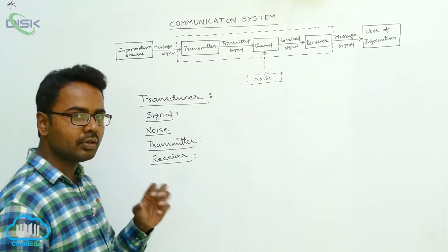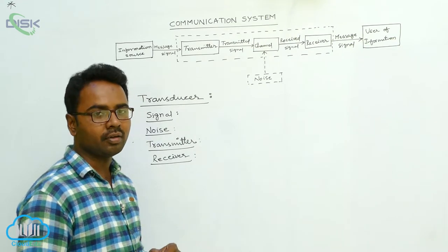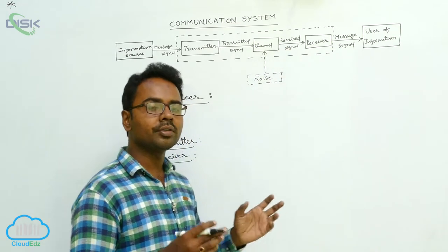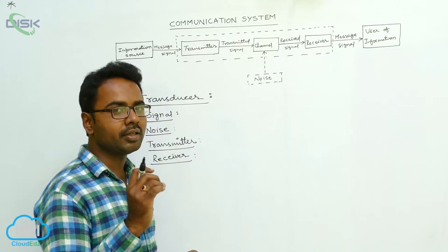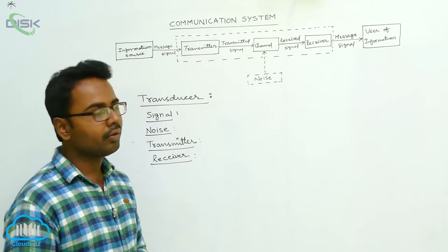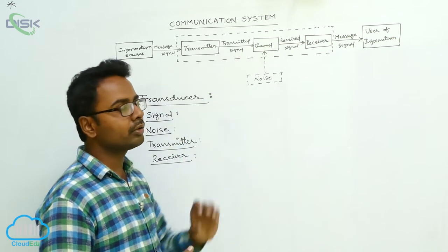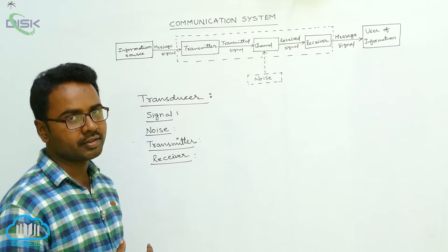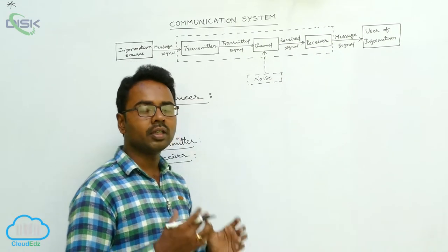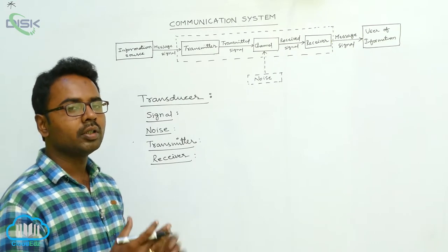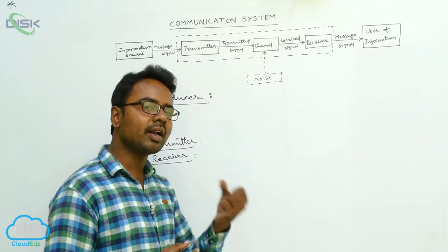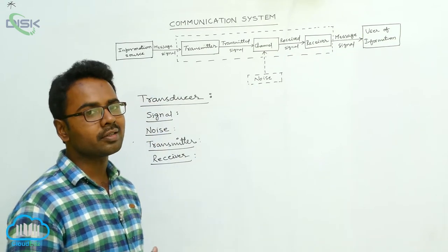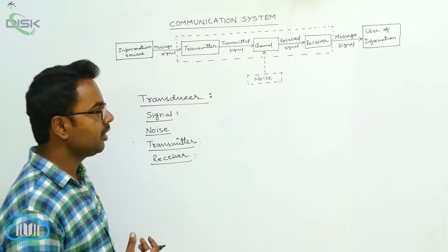A receiver is the device which receives the desired signal from the number of signals it receives from the channel. From the many signals received, it takes only the desired signal and reconstructs it. When the transmitted signal is corrupted by noise added through the channel, the receiver extracts only the required signal, stops the unwanted signals, and reconstructs the signal at the output.